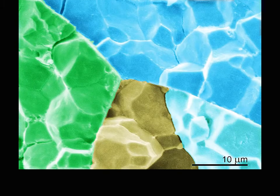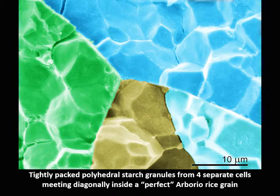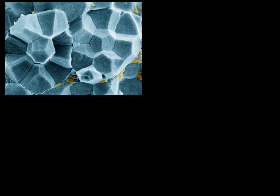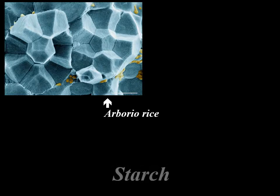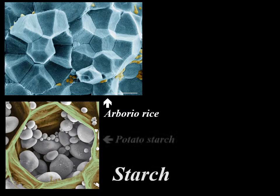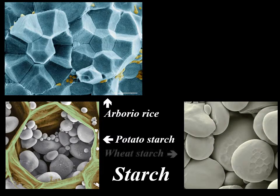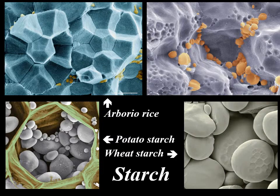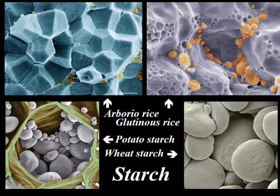In the next micrograph at a higher magnification, four grain cells with polyhedral starch particles meet diagonally inside a perfect Arborio rice grain. The starch in Arborio rice is particularly well organized in the form of polyhedrons, with mostly pentagonal and hexagonal walls, in contrast to oval starch granules in potatoes or wheat starch. Yet the rice starch particles accommodate minute protein bodies, as seen in a fractured glutinous rice grain. On fracturing, protein bodies which disengage from the starch particles leave dimples in their surfaces.